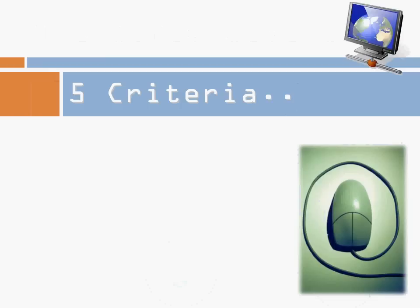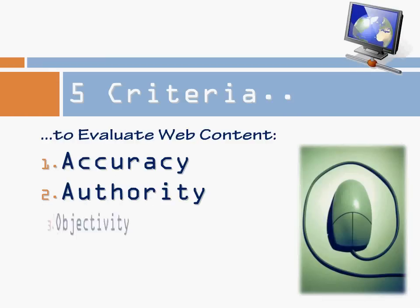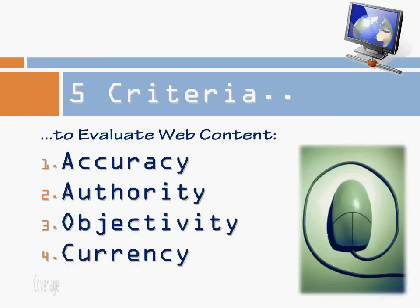So how do we do this? We need to use five criteria to evaluate web content. We need to assess its accuracy, its authority, its objectivity, its currency, and its coverage. Let's take a look now at each.